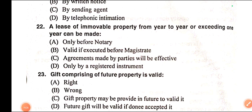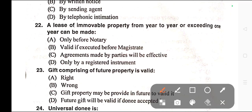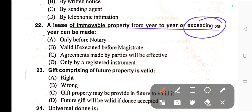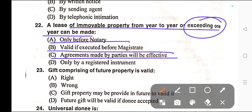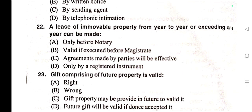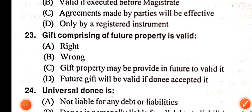Question number twenty-two: A lease of immovable property from year to year or exceeding one year may be made — A) Only before notary, B) Valid if executed before magistrate, C) Agreements made by parties will be affected, D) Only by a registered instrument. Correct answer is option D — only by a registered instrument. That is Section 106 of the Transfer of Property Act.